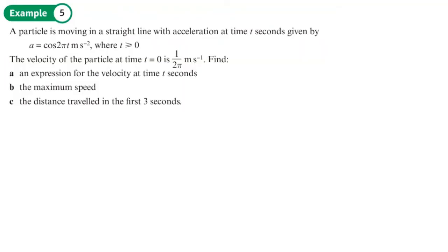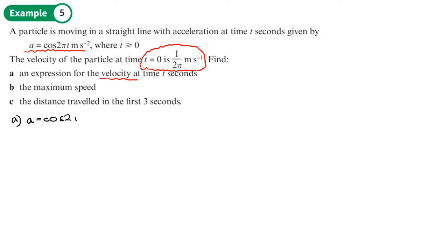A particle is moving in a straight line with acceleration at time t seconds given by a = cos(2πt). The velocity of the particle at time zero is 1/(2π). Find the expression for the velocity at time t seconds. We have acceleration equals cos(2πt).